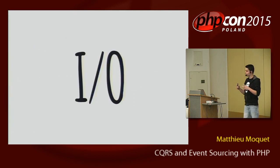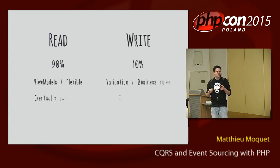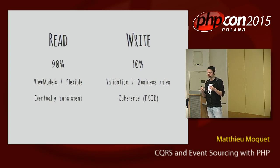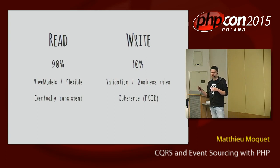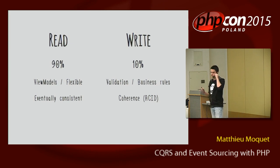The talk will focus on input and output. In your application, you basically always have two sides: a read and a write. For the read part, this means mostly 90% of your application — you want this to be flexible and eventually consistent. And at the opposite, the 10% write part of your application — you want to have a strong validation process and strong correlation in order to correctly write to your database.